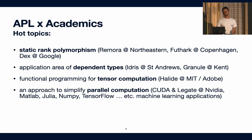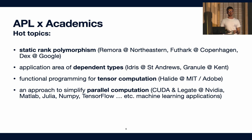Moreover, academics don't really talk about APL — they seem to think about functional programming and the application of functional programming or something called tensor computation. An example of this is something called Halide from MIT and Adobe. There's a very big push from the academic side to think about parallel computation and how to make it easier for new people to use new computation hardware such as GPUs. For that you have a lot of industry examples: CUDA and Legate from NVIDIA, languages like MATLAB, Julia, libraries like NumPy, TensorFlow, and so forth — usually for accelerating machine learning applications.